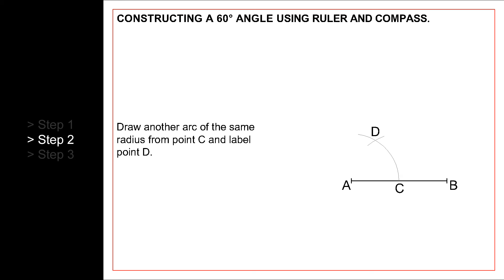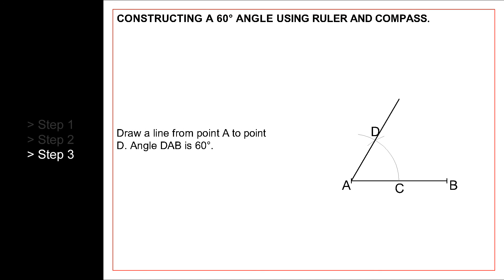Finally, draw a line from point A to point D. This completes angle DAB, which is exactly 60 degrees.